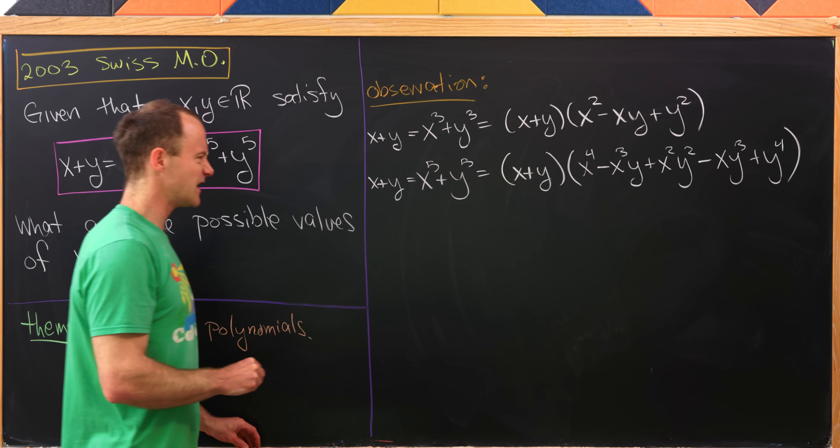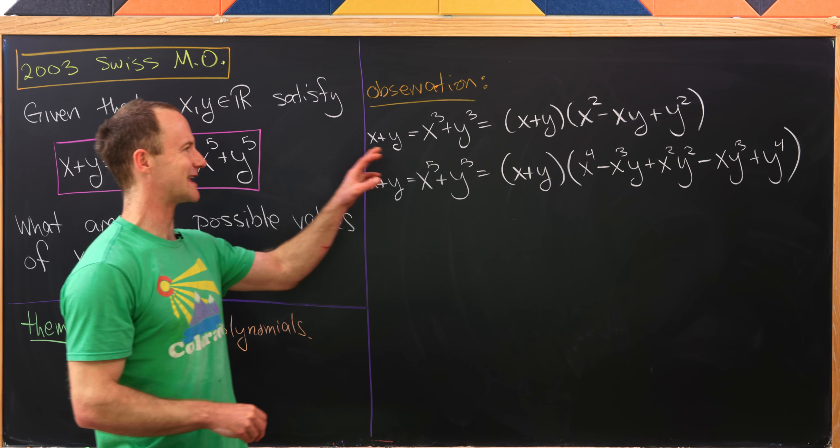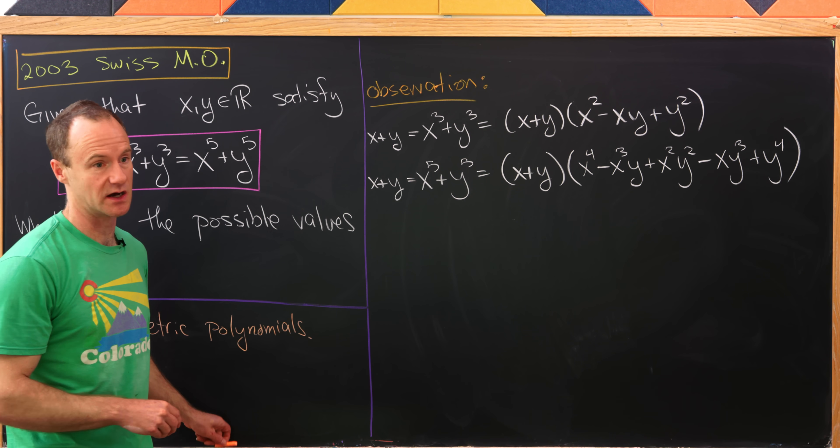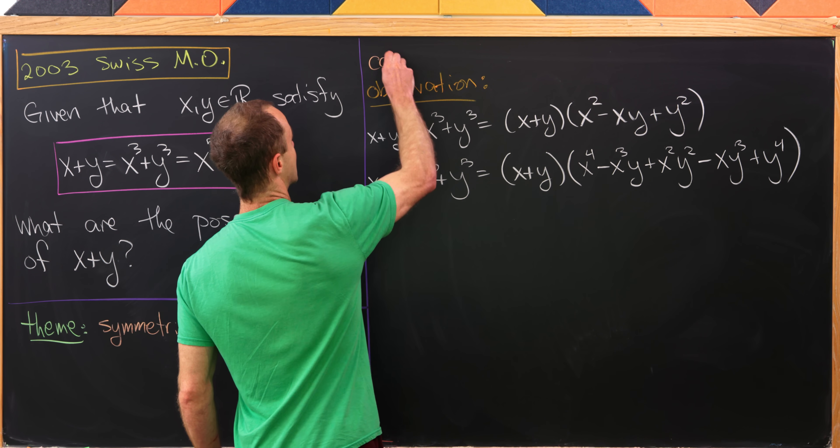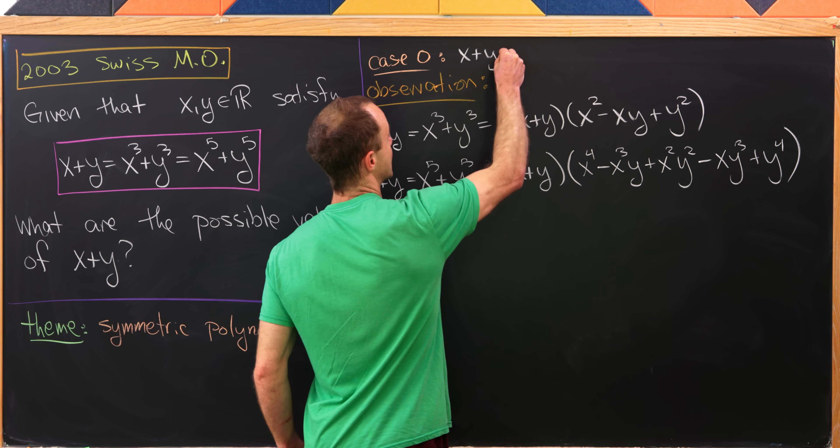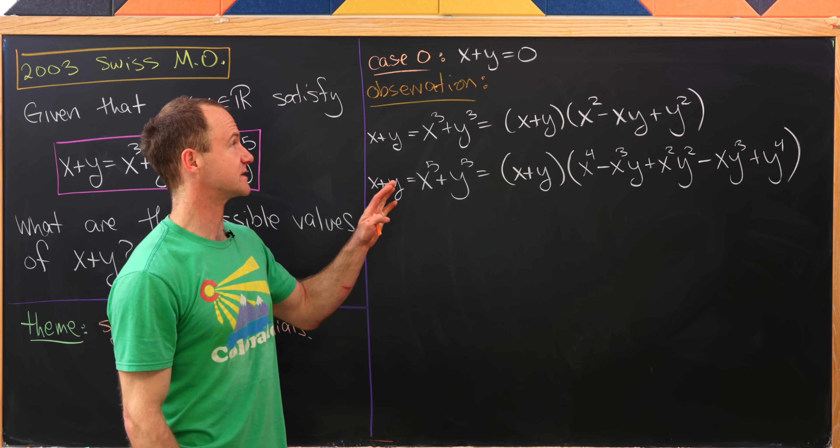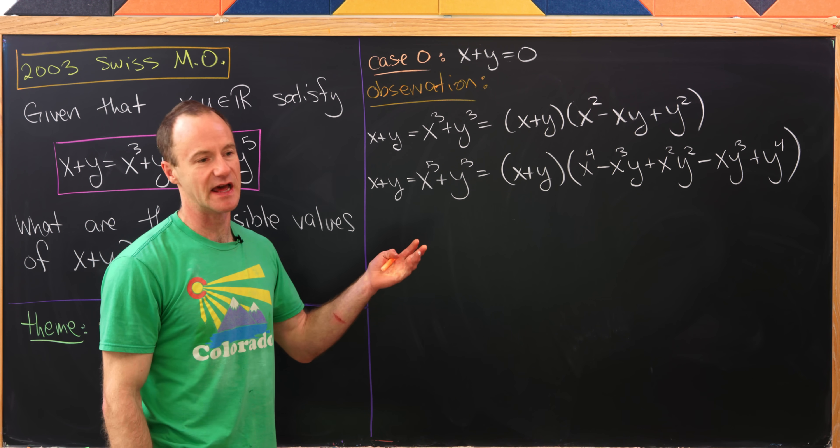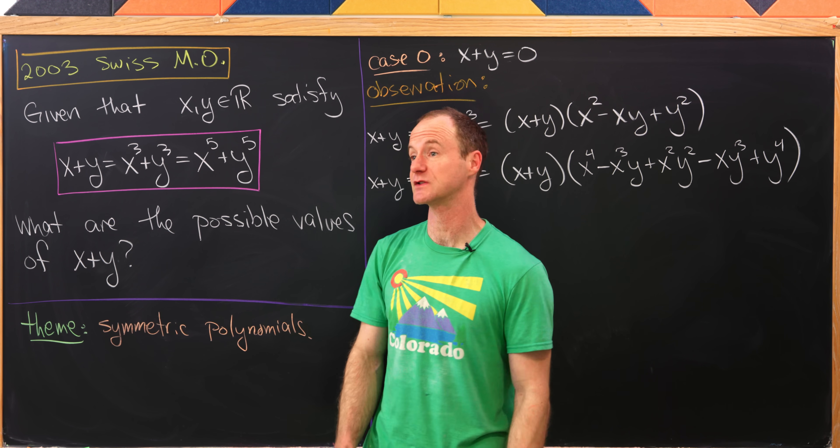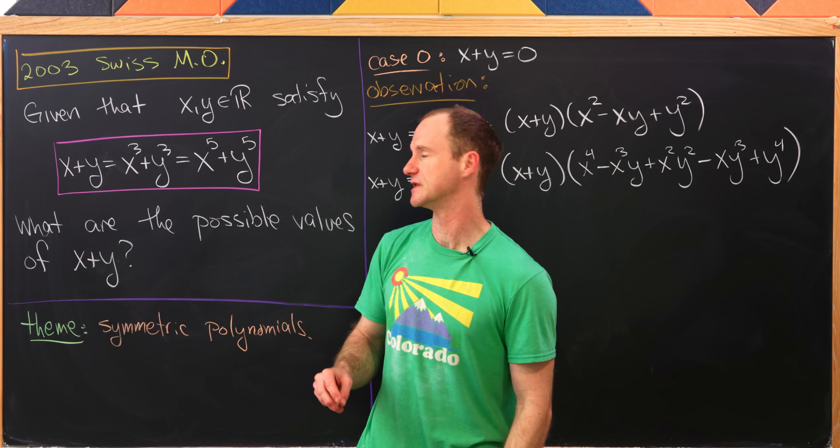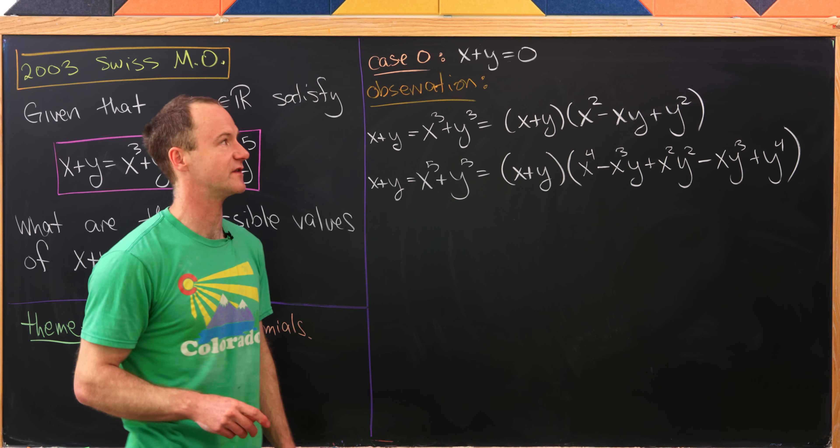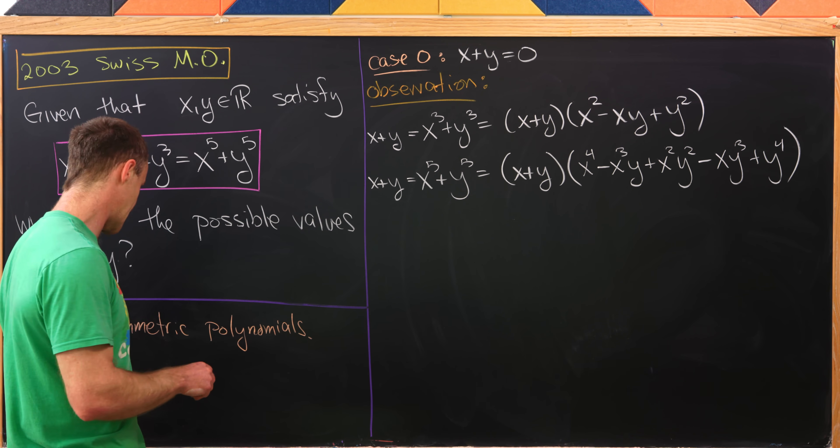That would maybe bring us to try to cancel x plus y from both sides of the equation, but we can only do that when x plus y is non-zero. So case zero is the case when x plus y equals zero. Because if x plus y equals zero, then that means y equals negative x, and that means x and y satisfy this whole equation. Notice if x plus y is zero, then x cubed plus y cubed is zero, and x to the fifth plus y to the fifth is zero. This is maybe what we would call a very simple or trivial solution. That's our case zero.